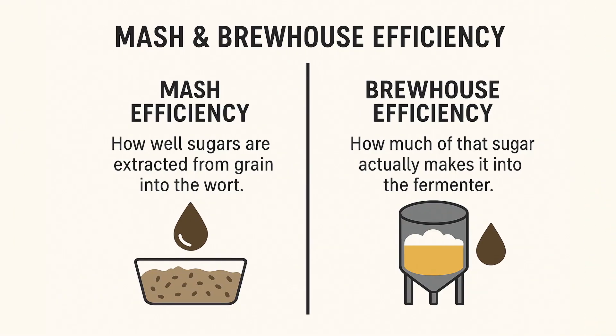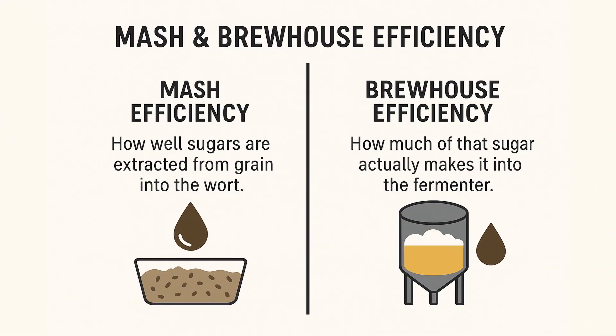Let's start by quickly defining these two types of efficiency in simple terms. Mash efficiency is how effectively you extract fermentable sugars from your malted grains into wort during the mash prior to the boil. Brew house efficiency is how much of that extracted sugar actually ends up in the fermenter after accounting for various losses through the boil and transfer. Mash efficiency is a key component and limiting factor for brew house efficiency, which will always be the lower number after those system losses are factored in.